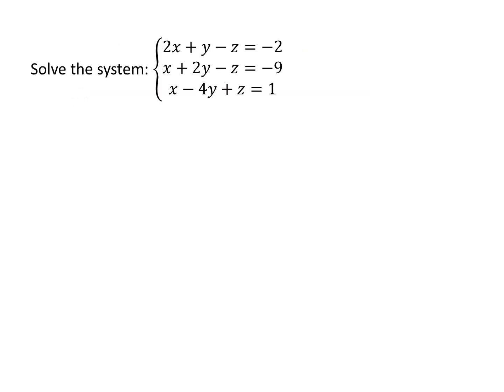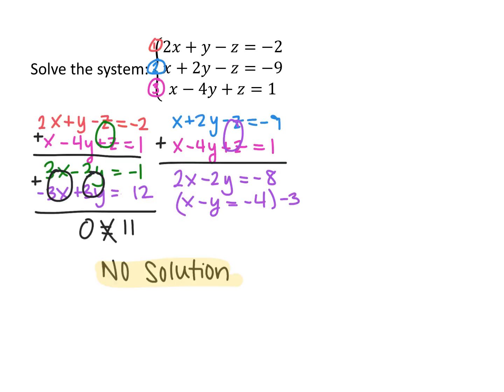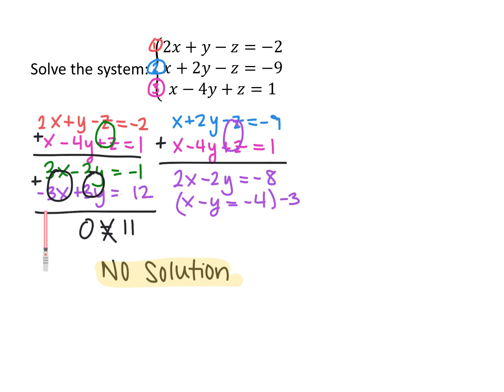Here we have another system of three equations. I chose to eliminate variable z from equations 1 and 3, and 2 and 3. Adding equations 1 and 3 gave 3x minus 3y equals negative 1, and adding equations 2 and 3 gave 2x minus 2y equals negative 8, which simplified to x minus y equals negative 4. Solving the two-equation system by elimination, multiplying by negative 3, the x's and y's both cancelled and I ended up with 0 equals 11 — a false statement — so this system has no solution.